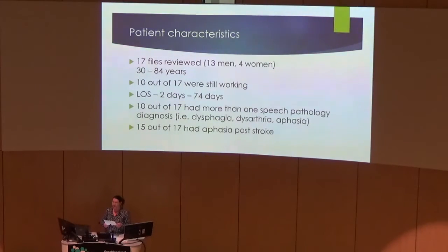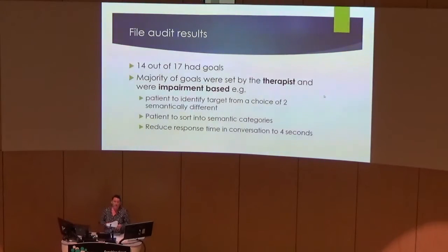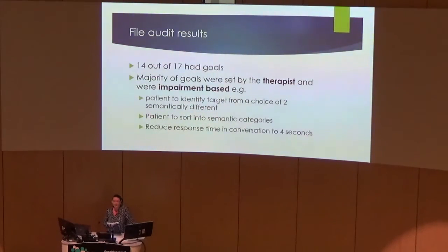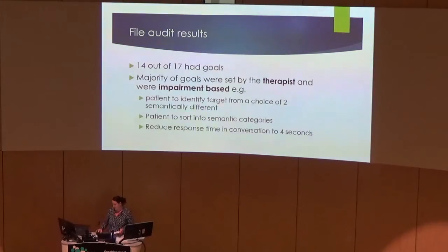15 out of the 17 had aphasia post-stroke. 14 out of the 17 files had goals, but the majority of these goals were set by the therapist and were impairment-based. Some examples include: the patient to identify a target from a choice of two semantically different objects, patient to sort objects into semantic categories, and reduce response time in conversation to four seconds.